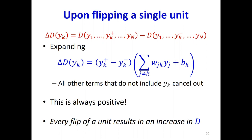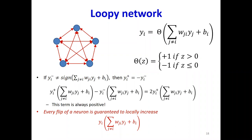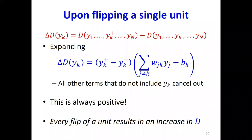A student asks about slide 18: 'In the last line it says every flip of a neuron is guaranteed to locally increase D — but that is not true for the case where the output is the same, right?' The professor clarifies: that's correct — if the output is the same, there is no flip. So basically, any time neurons flip, D is going to increase; otherwise D is going to stay the same.